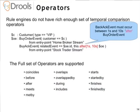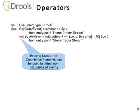We support the 13 temporal operators allowing a full range of temporal comparisons. For example, a buy order event must happen within one to ten seconds, and the buy acknowledgement event must happen between one and ten seconds after the buy order event. But knowing when something happens isn't always that useful — what's more useful is knowing when something doesn't happen, such as when a buy acknowledgement does not happen within one to ten seconds of a buy order event. And that's not trivial to write in Java code.